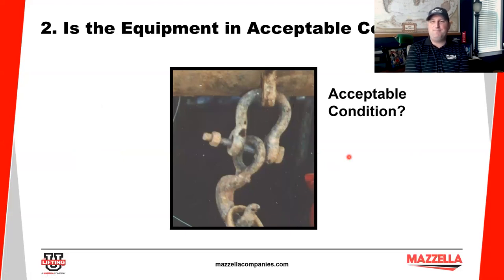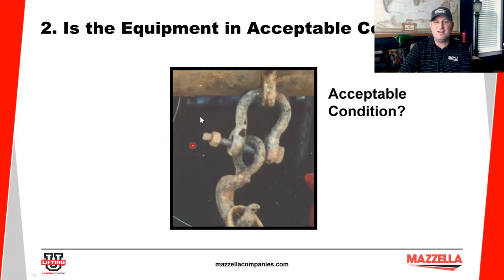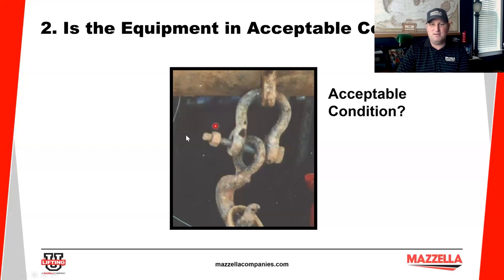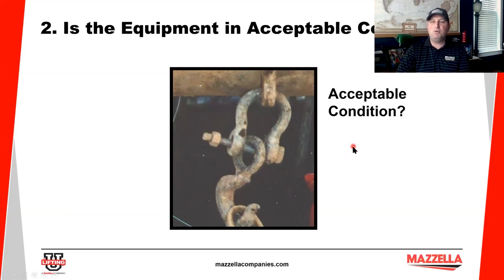Is this an acceptable condition? Before I point it out, can you write down what's wrong? We've got a shackle, a pin, and a hook — and we're missing some items. What we have is a shackle using a commercial-grade bolt — absolutely unacceptable. That bolt is not designed to work with that shackle or pick up a load. We also have a sling hook with a place for a latch but no latch. Under slack conditions the rigging can come out, so this is not within acceptable condition.